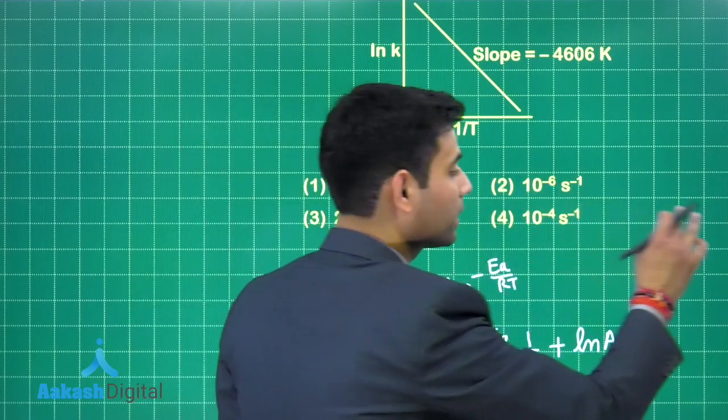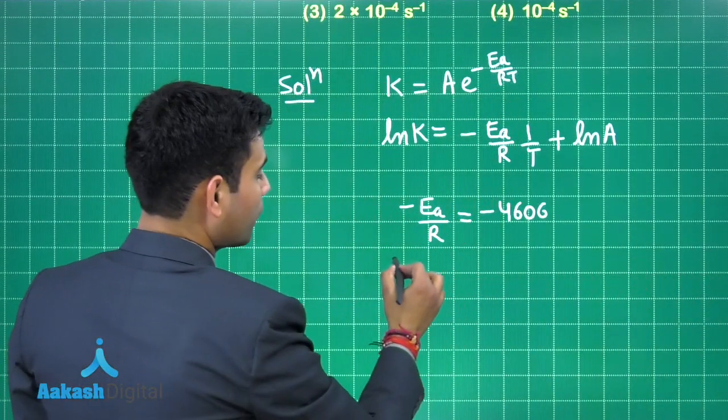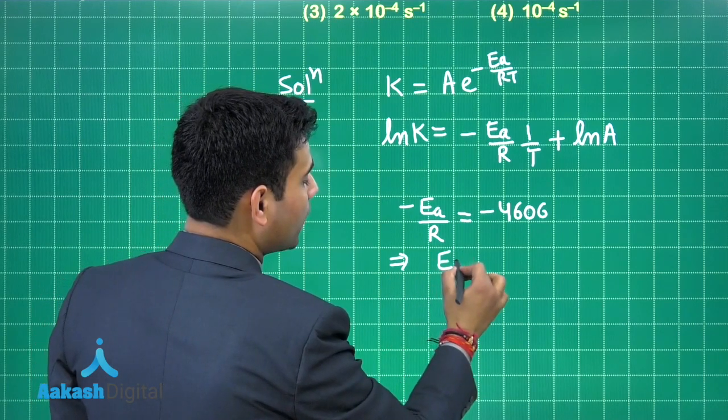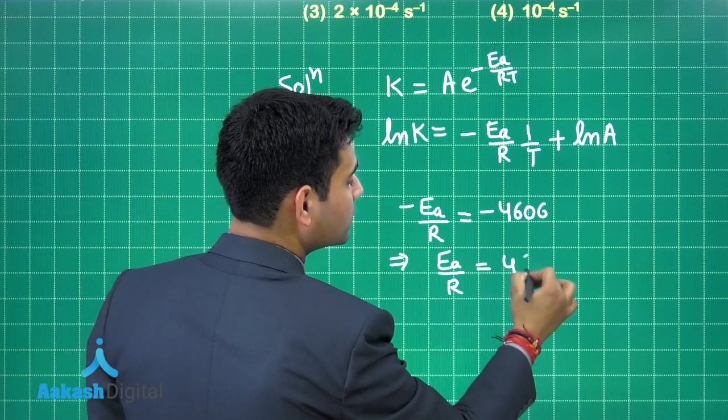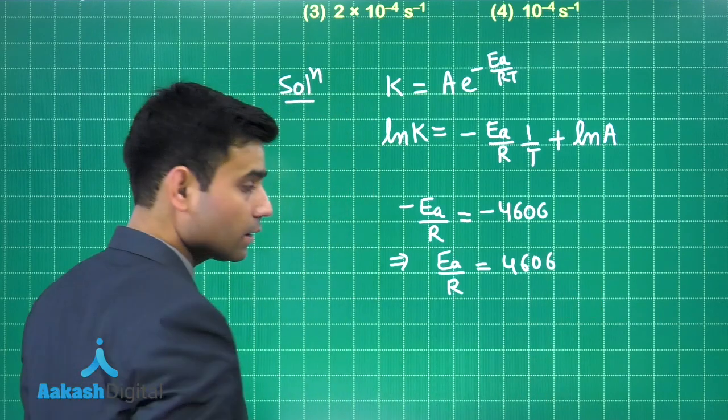So, from here I can write minus E upon R is equals to minus 4606 according to the question given here or slope given here. So, from here I can write that E upon R is equals to 4606.